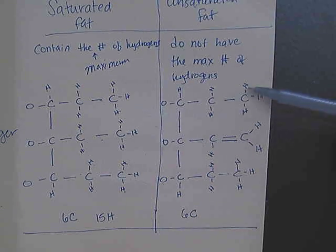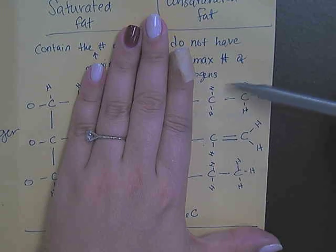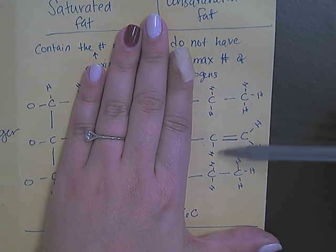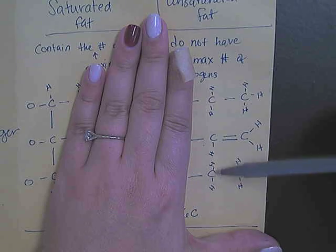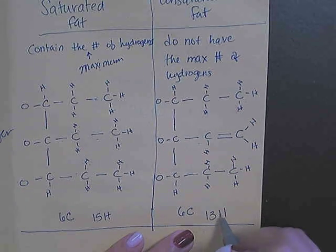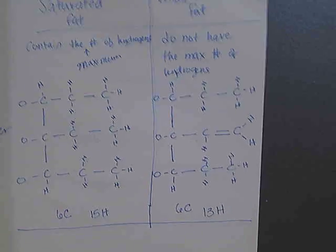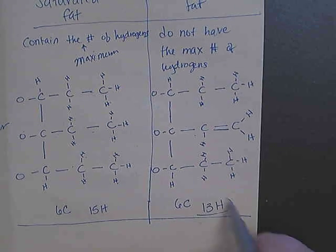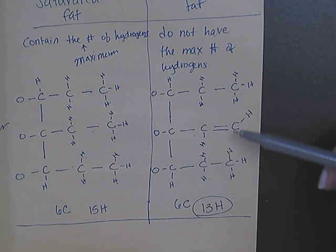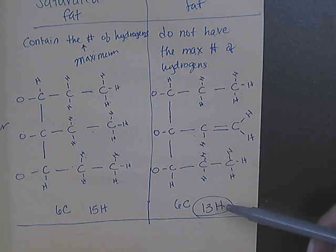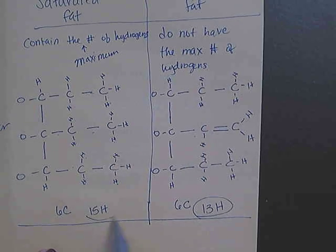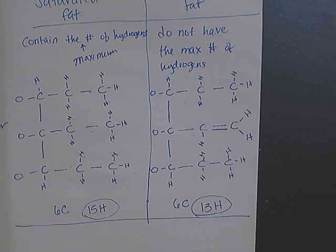Counting the hydrogens in the unsaturated fat gives thirteen hydrogens. So when you look at the number of hydrogens in an unsaturated fat, because of that double bond, its number of hydrogens is not the same as a saturated fat. This change in structure contributes to some of the properties of your unsaturated fat.